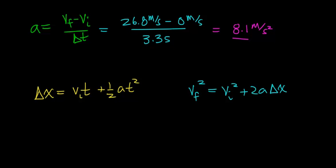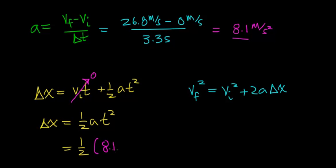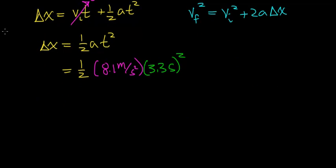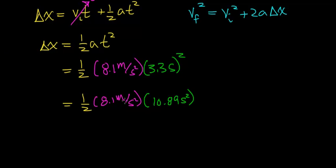Starting with the first kinematic equation: since the initial velocity is 0 meters per second, the first term becomes 0. So distance = one-half × acceleration × time². Plugging in: one-half × 8.1 m/s² × (3.3 s)². Squaring 3.3 seconds gives 10.89 seconds squared — the seconds-squared units cancel — and multiplying one-half × 8.1 × 10.89 gives us a distance of 44.1 meters. That's our answer using the first method.